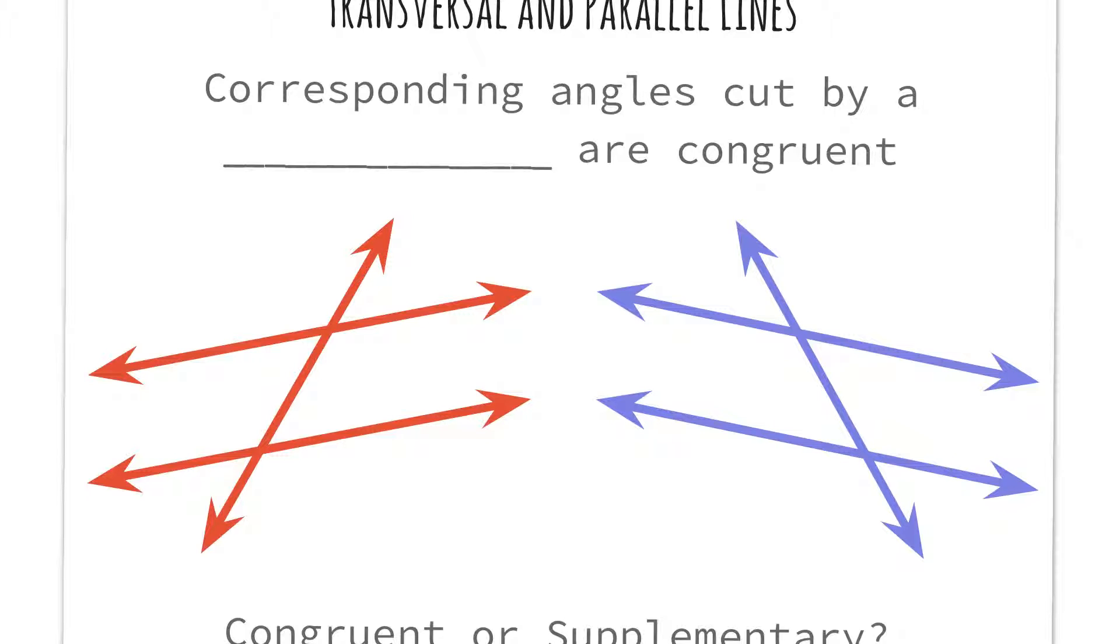So, transversal and parallel lines. I'm going to begin with corresponding angles cut by a transversal are congruent.